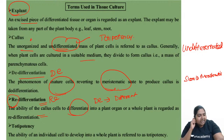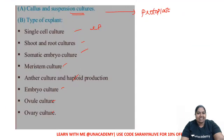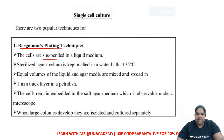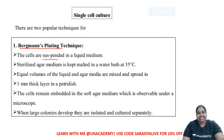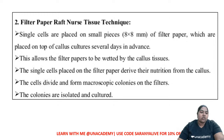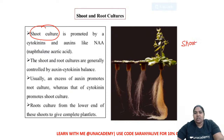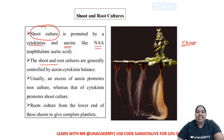There are different types of cultures: callus culture, suspension culture (protoplasts are mainly grown in suspension cultures), single cell culture — for example, single cell proteins like Spirulina — shoot culture, root culture, embryo culture, meristem culture, anther culture. For single cell culture, Bergman's plating technique is used — cells in suspension are mixed with media and plated.